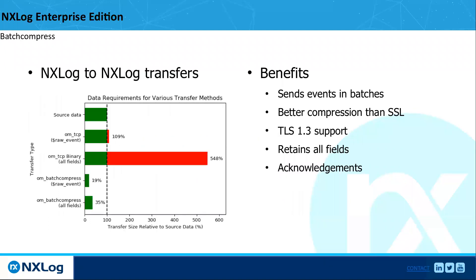We get asked a lot about compression, and batch compression is a hot topic lately. This graph shows source data size compared to TCP overhead, binary format, and batch compress. Sending as a batch compressed raw event comes in at about 19% of the original source data size. Sending all fields with batch compress is about 35% of the source data — a huge win, especially if you're paying for bandwidth to your SIEM or want to be more efficient on the network. It compresses, can be encrypted, everything's sent in batches, all fields are retained, and batch-level acknowledgements are included.